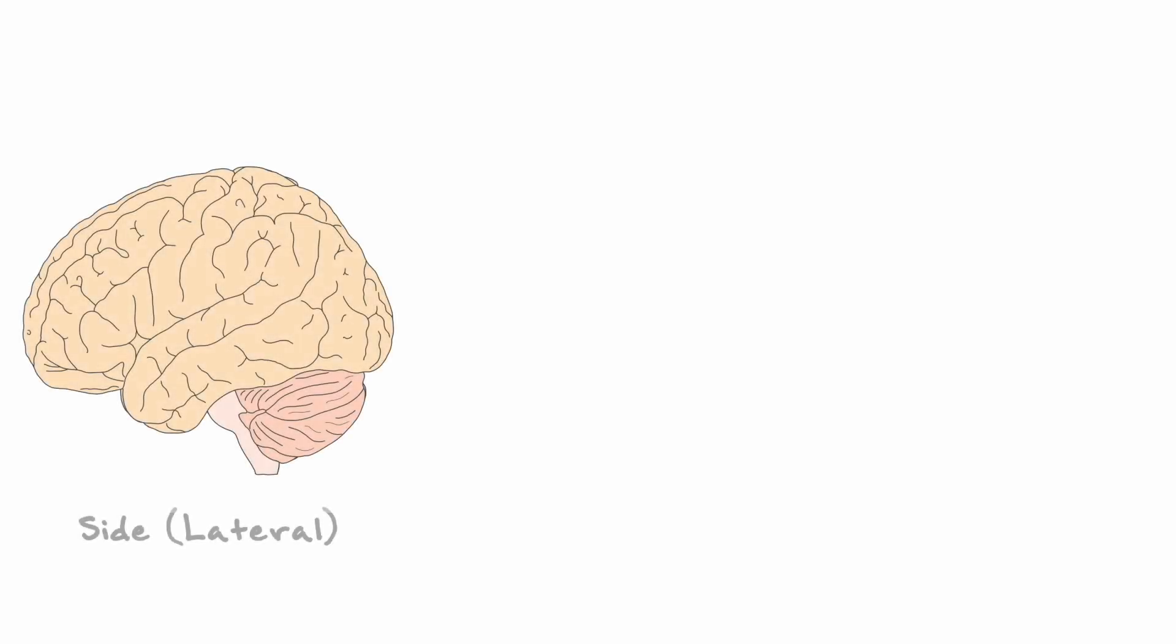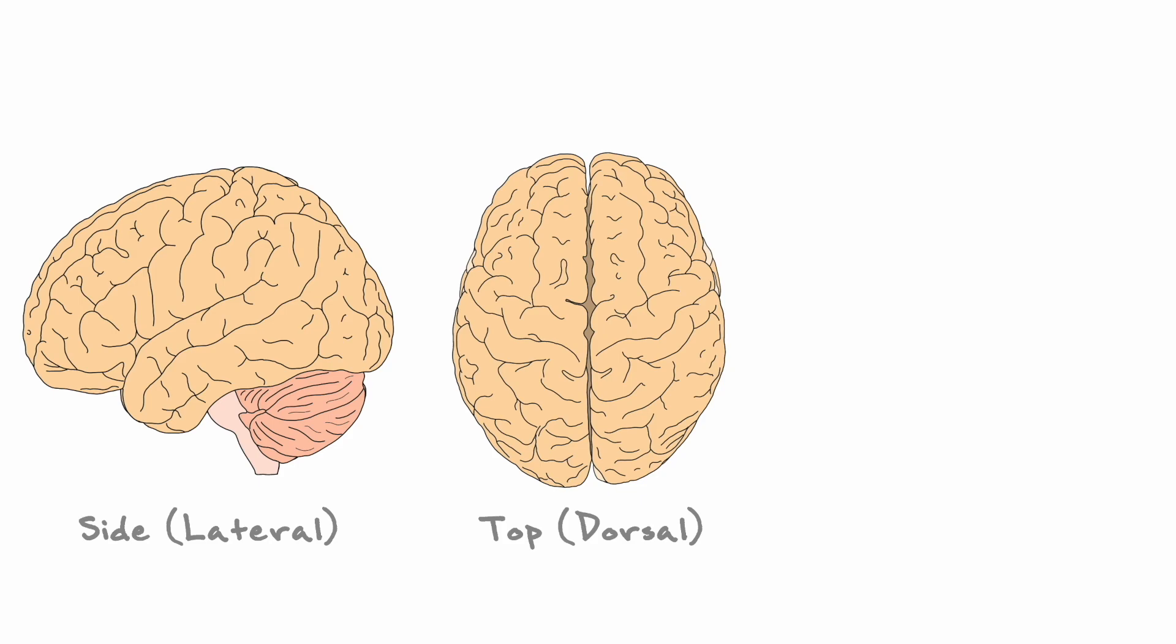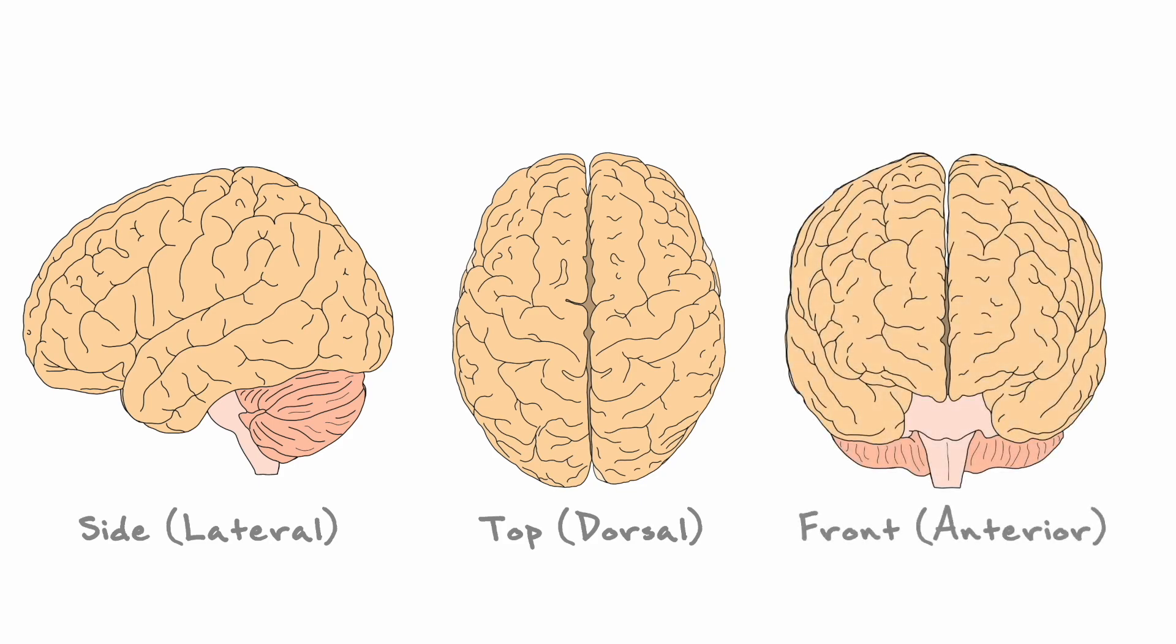Now, as you might have noticed, although the brain and spinal cord have some features that we can examine on their surface, there is a lot of important structures in the CNS that can only be seen through cross sections. Due to the complex 3D structure of the brain, there are 3 different types of cross sections that can be made: one from the side or lateral view, one from the top or dorsal view, and one from the front or anterior view.